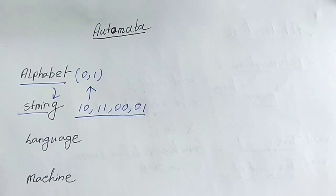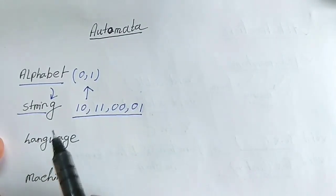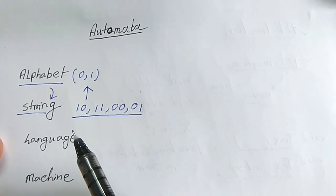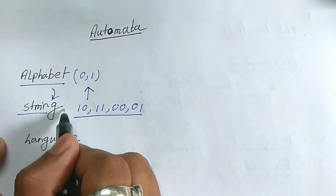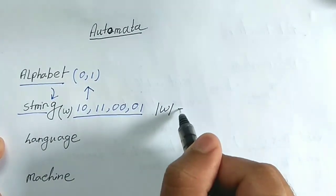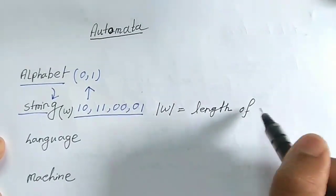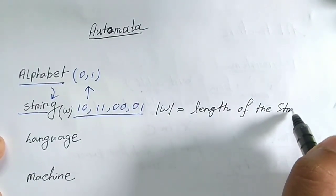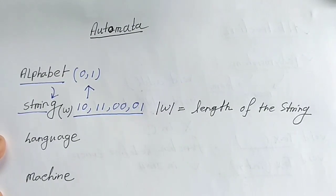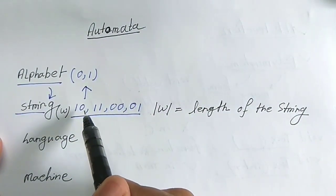Now, my question is: how many strings can possibly be generated from the alphabet {0, 1}? This can be infinitely many. But before doing this, we need to discuss something about the length of a string. We say the string is W, so mod W equals the length of the string. Length of the string means how many alphabet symbols the string consists of. All the strings we are making with alphabet {0, 1} having length 2.